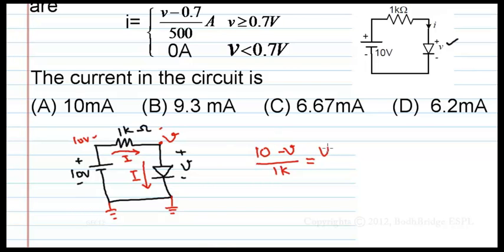This is equal to V minus 0.7 by 500. For now, I am assuming that current exists. That is, I am assuming this much current will flow through it.